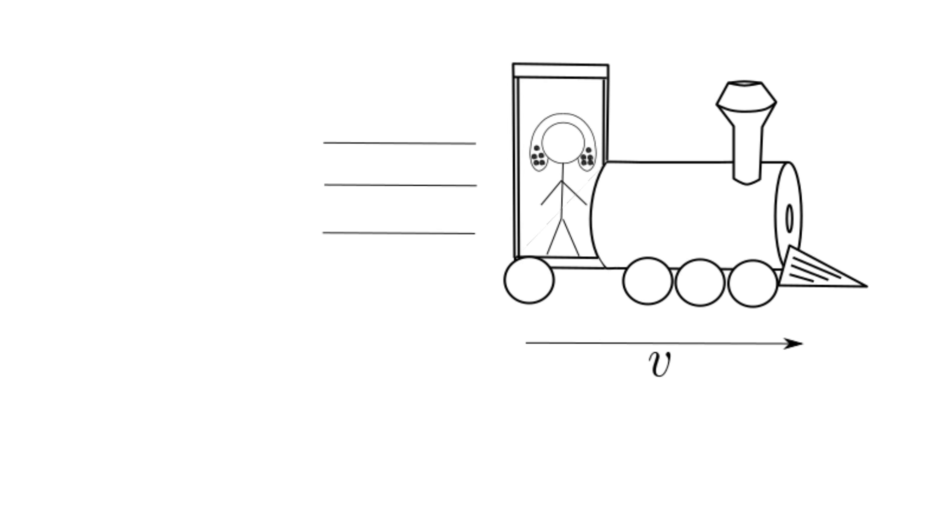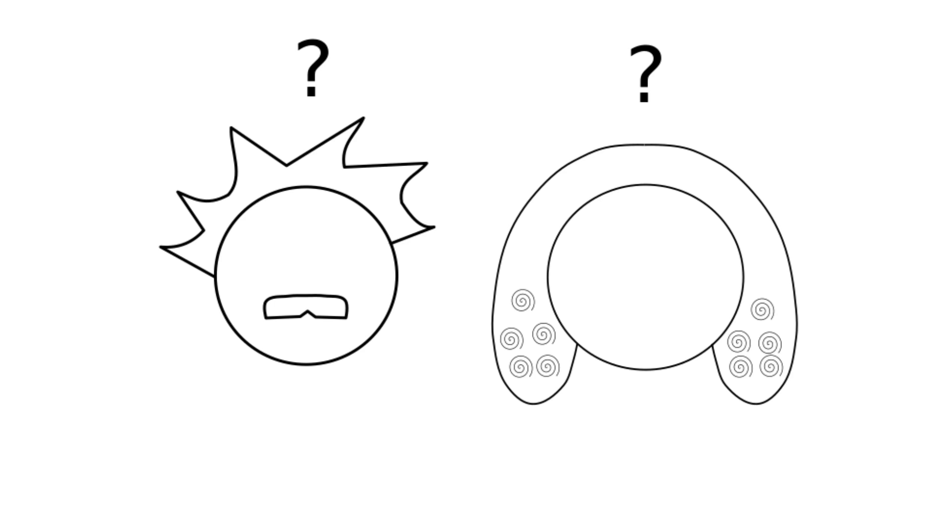You might say Isaac is just moving and Albert is not, so of course the conference looks like it's getting closer to Isaac. And of course you'd be right. But how can we reconcile the two different observations of the same universe? This is actually surprisingly simple to do.